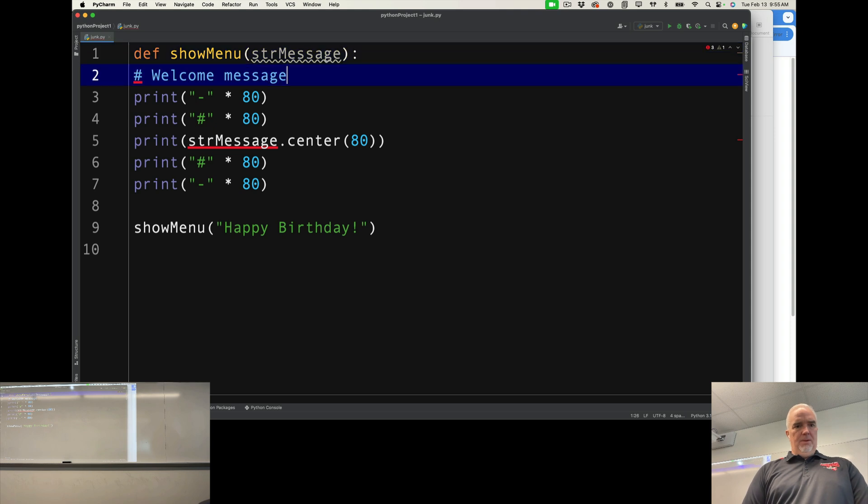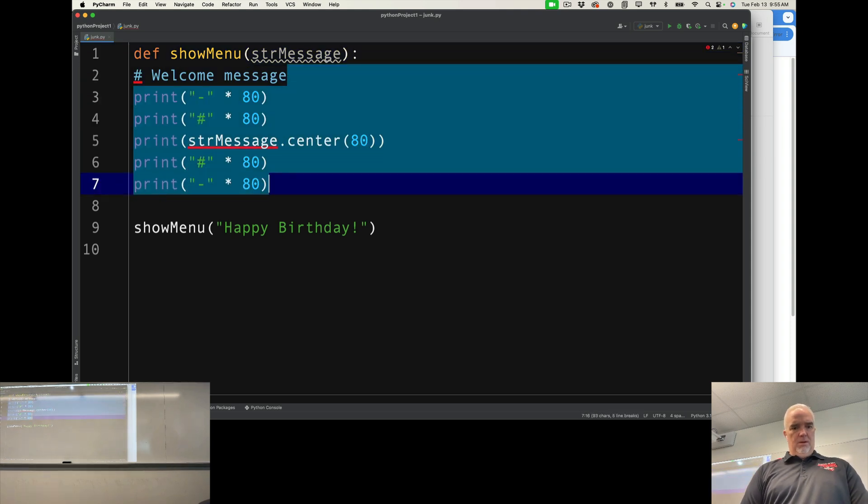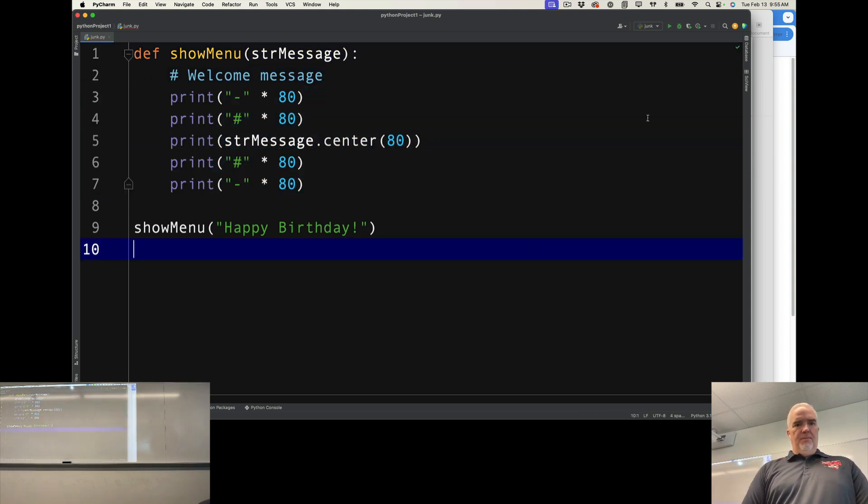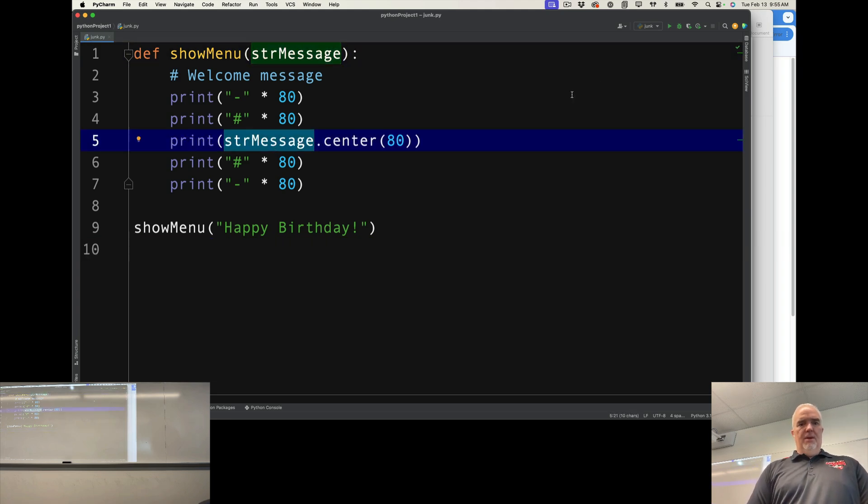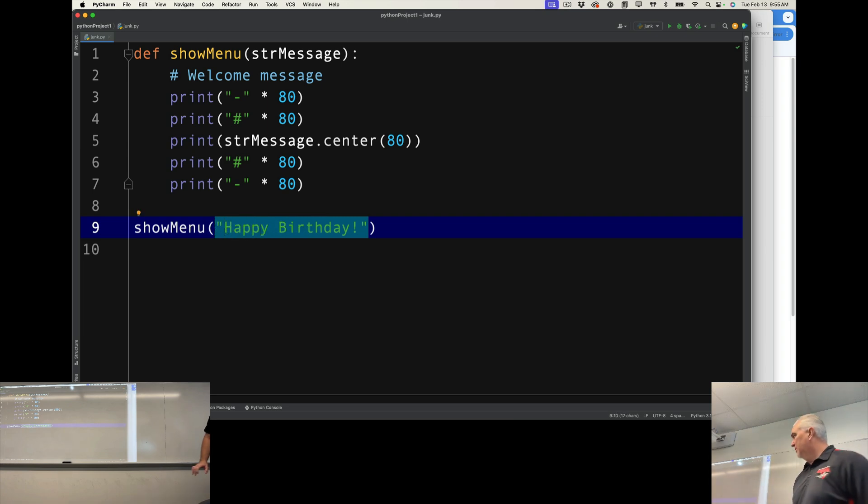I have the message here. And then what that means is when I call that function using Happy Birthday, Happy Birthday is passed into that parameter slot. And then it becomes a variable inside that function that I can then use.